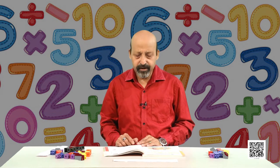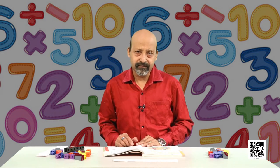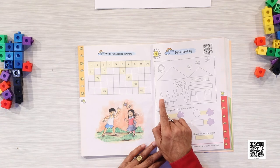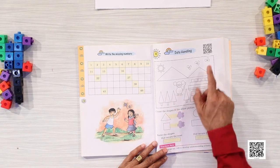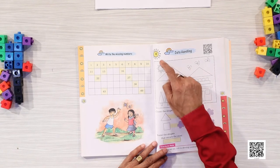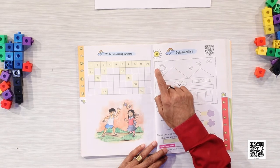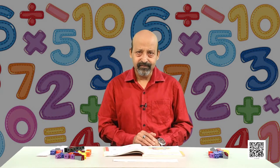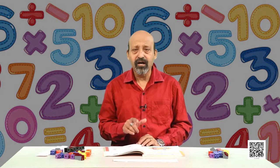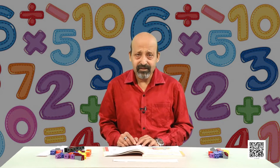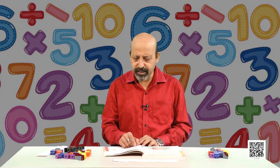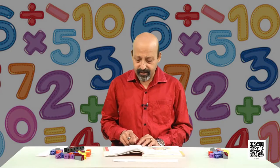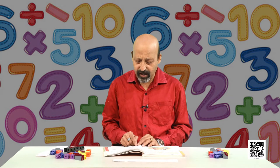Let us now find which shape occurs the most. Can you tell? Let us see again. These triangles: 1, 2, 3, 4, 5, 6, 7, 8, 9, 10, 11, 12, 13, 14, 15, 16, 17, 18, 19, 20, 21, 22 — these are 22. The rest are all less than 22. So the triangular shape occurs the most. You can write the name triangle or even draw the shape if you do not know how to write triangle — no problem, draw the shape so that anybody can see that this shape occurs the most.